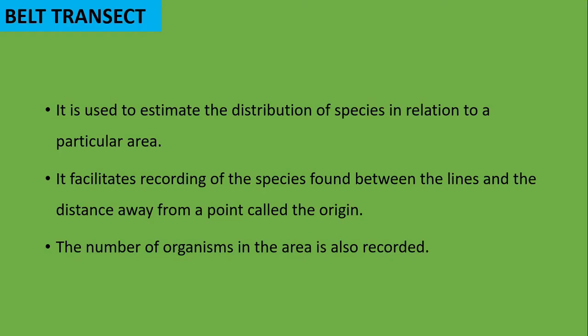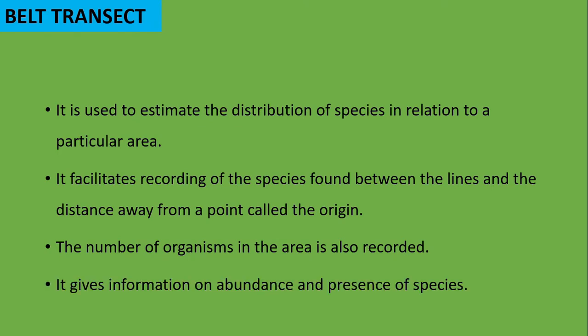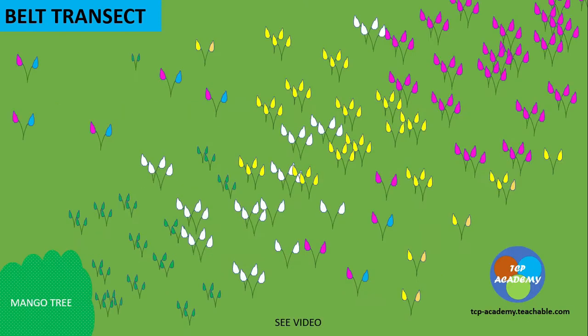The number of organisms in the area is also recorded, giving information on abundance and presence of species. It's very important to be reminded that the line transect does not look at abundance. However, the belt transect does.